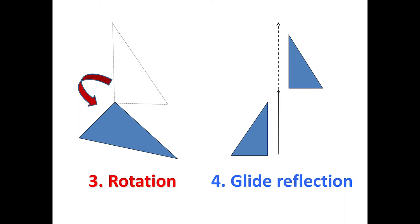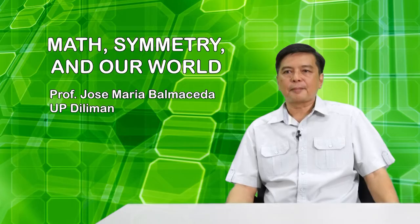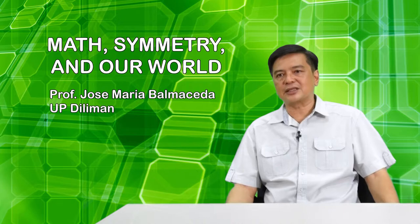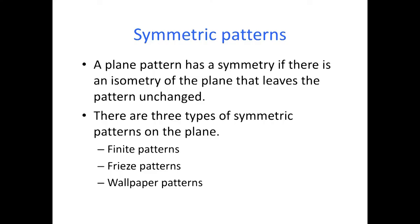There are also reflections about lines, rotations about points, and you can even combine a reflection and a translation to get a so-called glide reflection. A glide reflection is what you get, for instance, when your left footprint transforms to your right footprint — the left foot moves forward by translation, and that gets flipped to the right side by a reflection.